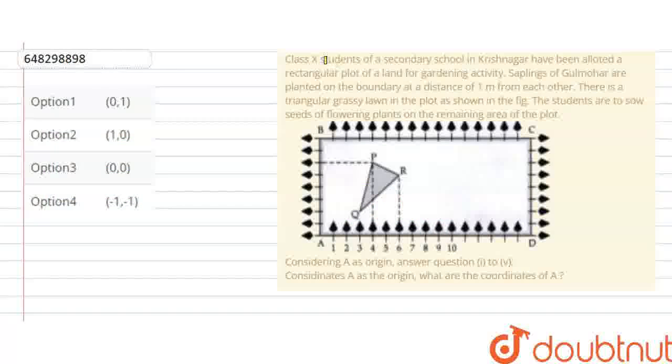Question is given: Class 10th students of a secondary school in Krishnanagar have been allotted a rectangular plot of land for gardening activity. Saplings of Gulmohar are planted on the boundary at a distance of 1 meter from each other. There is a triangular grassy lawn in the plot as shown in the figure. The students are to sow seeds of flowering plants on the remaining area of the plot.